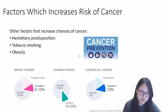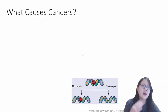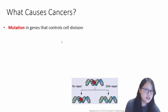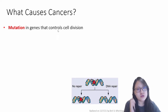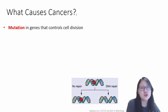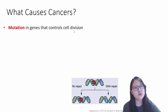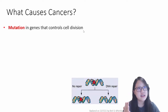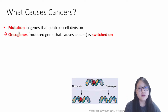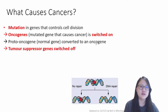Cancer is due to uncontrolled mitosis and mutations in particular places — specifically, mutations in genes that control cell division. Mutated genes that cause cancer are called oncogenes. These cancer genes are switched on; they used to be proto-oncogenes, the normal version of the gene, but when mutated they convert into cancer-causing oncogenes.